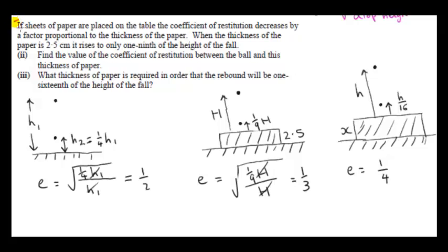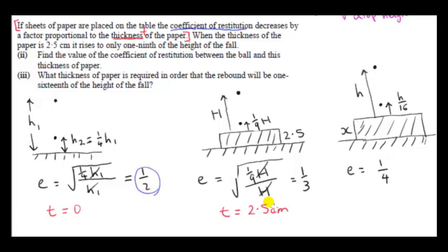Let's get back to the meaning of the proportionality statement. I'll let t stand for the thickness of the paper. In the first situation there's no paper, so the thickness is zero. In the second situation the thickness is 2.5 centimetres. We are given that the coefficient of restitution decreases by a factor proportional to the thickness. So let's consider the coefficient of restitution when t is zero — that's one half — and when t is 2.5, it's one third. We want the factor that one half decreases by to get one third. Let's call that factor R.